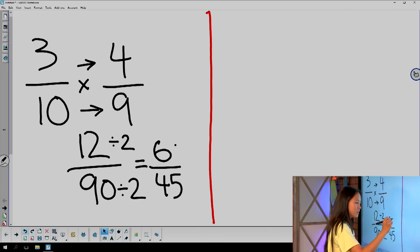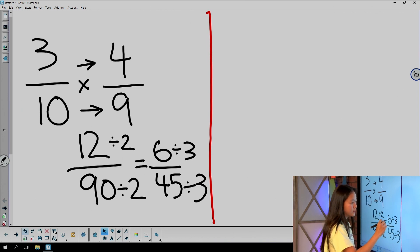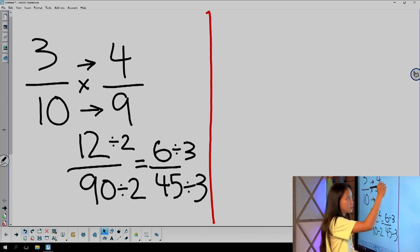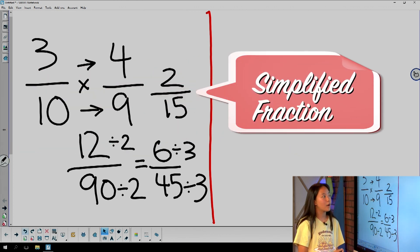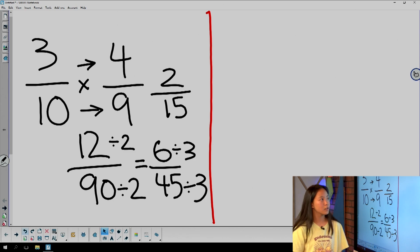So next you would divide by 3 again, and 6 divided by 3 would equal 2, and 45 divided by 3 would equal 15. So that would be a simplified fraction rather than writing 12 over 90, which would be a non-simplified way to write it. And here's another way to do it.